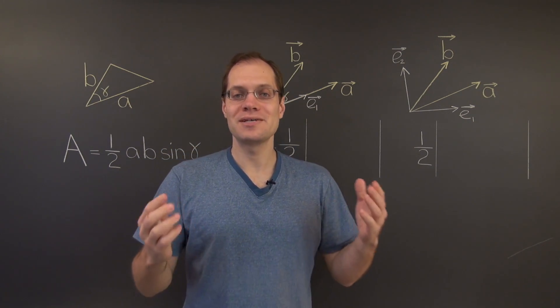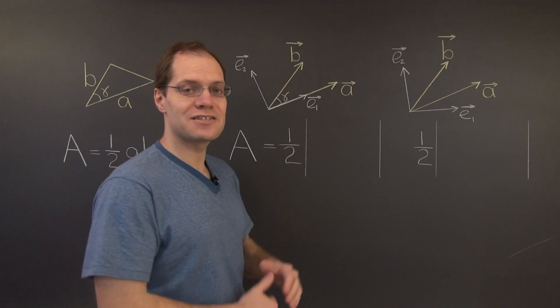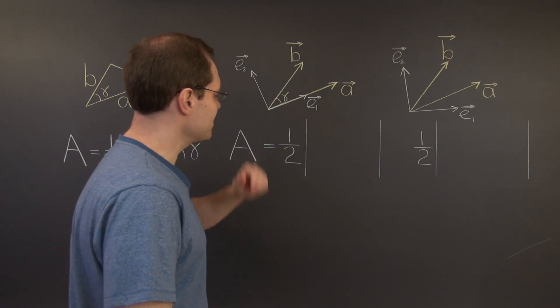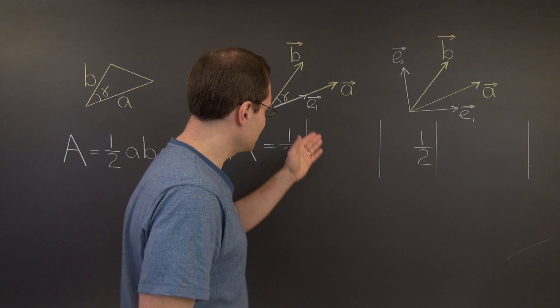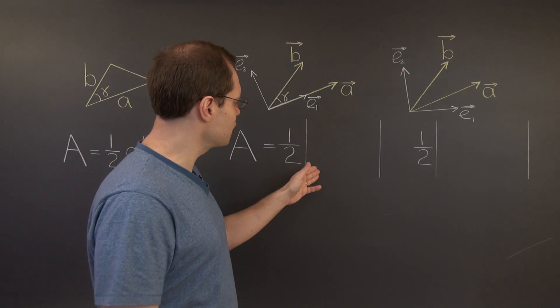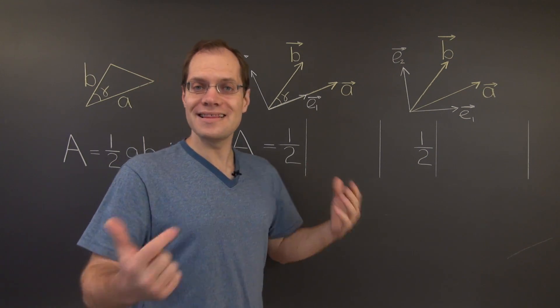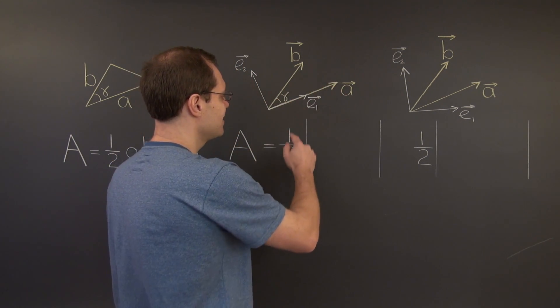All right, we must now populate these determinants with the components of the vectors A and B with respect to these bases. In the first case, the components of the vector A, being the first vector that goes into the first column, are clearly dictated by the choice of basis, are A, 0.